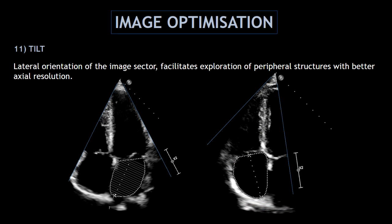Our next feature is the tilt, and this is the lateral orientation of the image sector. This facilitates the exploration of peripheral structures with better axial resolution. Here I'm showing how I adjust the tilt during the scan — on the left side, I'm tilting the image towards the left atrium, and on the right side, I'm tilting the image towards the right atrium. This allows me to concentrate on those structures, obtaining a better axial resolution.